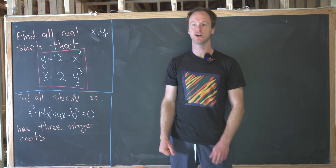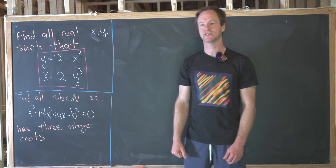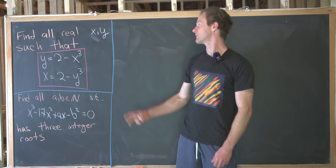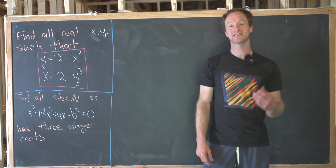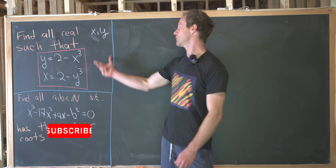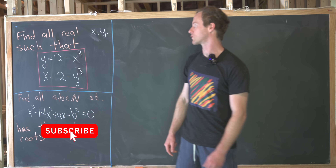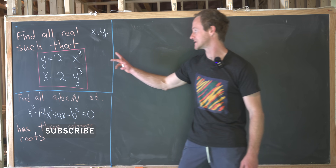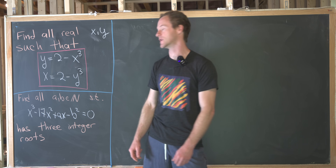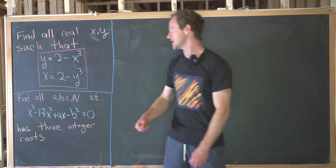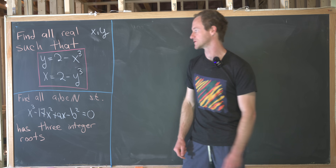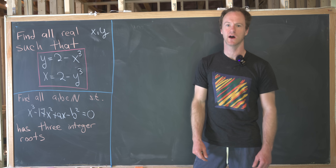Today I've got a couple of nice algebra competition style math problems to show you. The first one has to do with a system of non-linear equations. We want to find all real numbers x and y satisfying this system: y equals 2 minus x cubed, and x equals 2 minus y cubed.